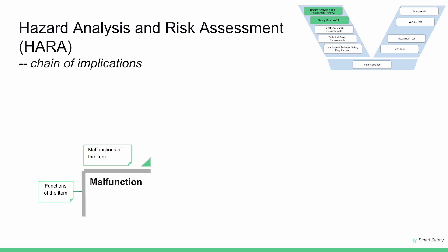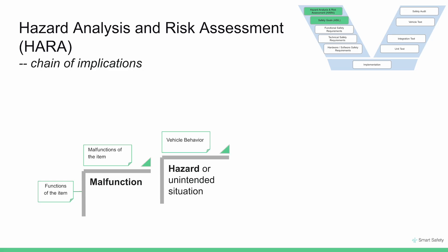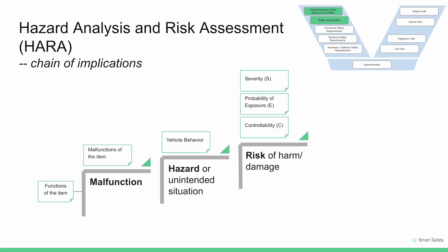Once you've identified the boundary of an item and the corresponding function it implements, we describe the malfunctions that can appear for each function. Once you've identified what a malfunctioning behavior is, you define the hazard at the vehicle level — how the vehicle is going to behave if that particular malfunction occurs. As the next step, you determine what the risk of harm or damage is, which depends on the risk of harm to people inside and outside the vehicle. This depends on three parameters: severity of the failure, probability of occurrence, and controllability — how controllable the vehicle is by the driver during a hazardous event.